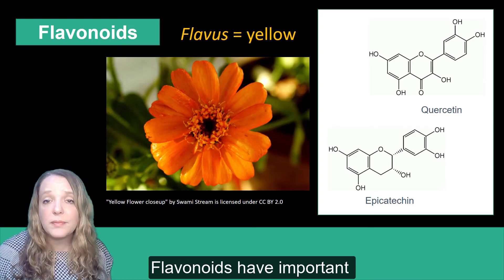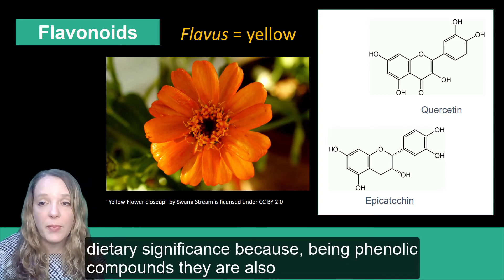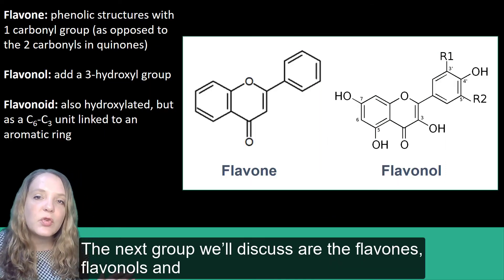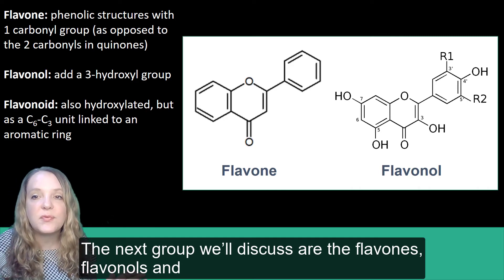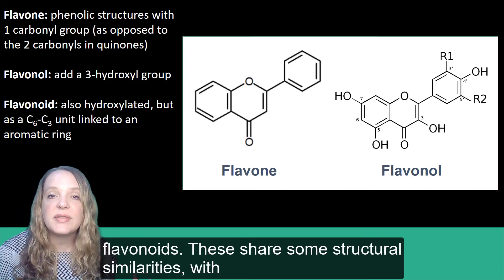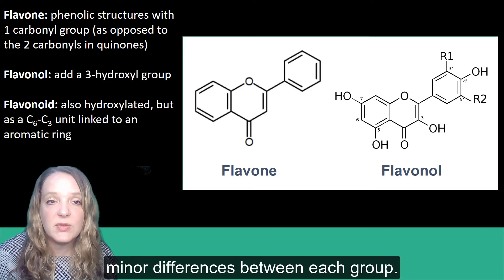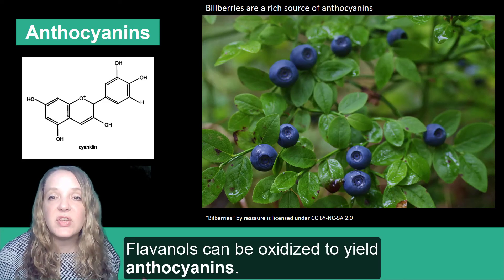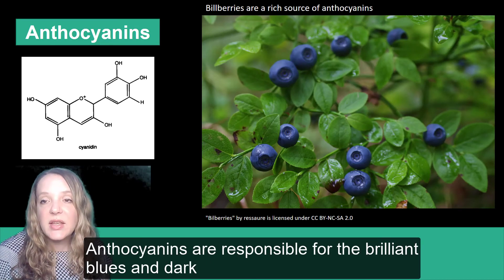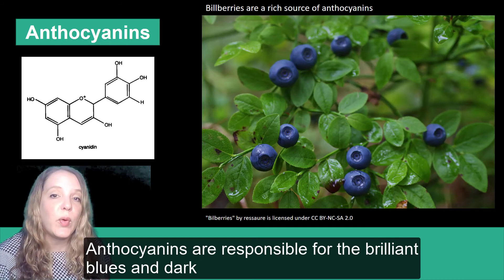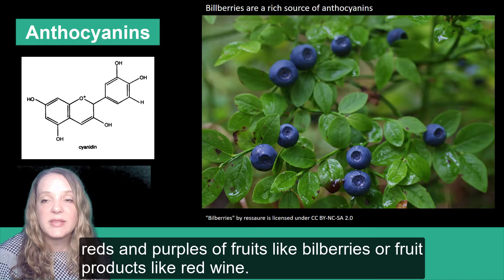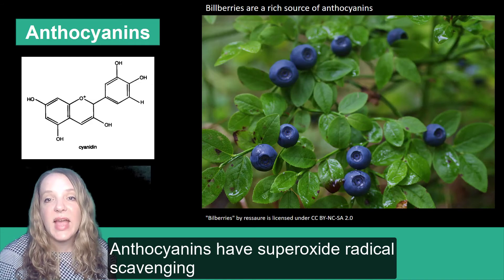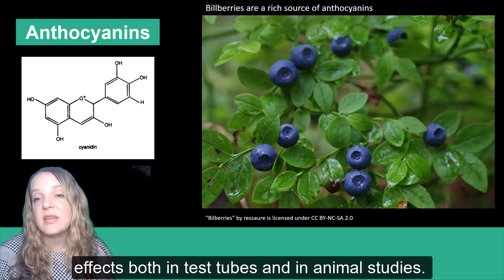Some flavonoids are exceptionally bitter and astringent while others are intensely sweet. Flavonoids have important dietary significance because, being phenolic compounds, they are also strongly antioxidant. The next group we'll discuss are the flavones, flavanols, and flavonoids, which share some structural similarities with minor differences between each group. Flavanols can be oxidized to yield anthocyanins. Anthocyanins are responsible for the brilliant blues and dark reds and purples of fruits like bilberries or fruit products like red wine. Anthocyanins have superoxide radical scavenging effects both in test tubes and in animal studies.